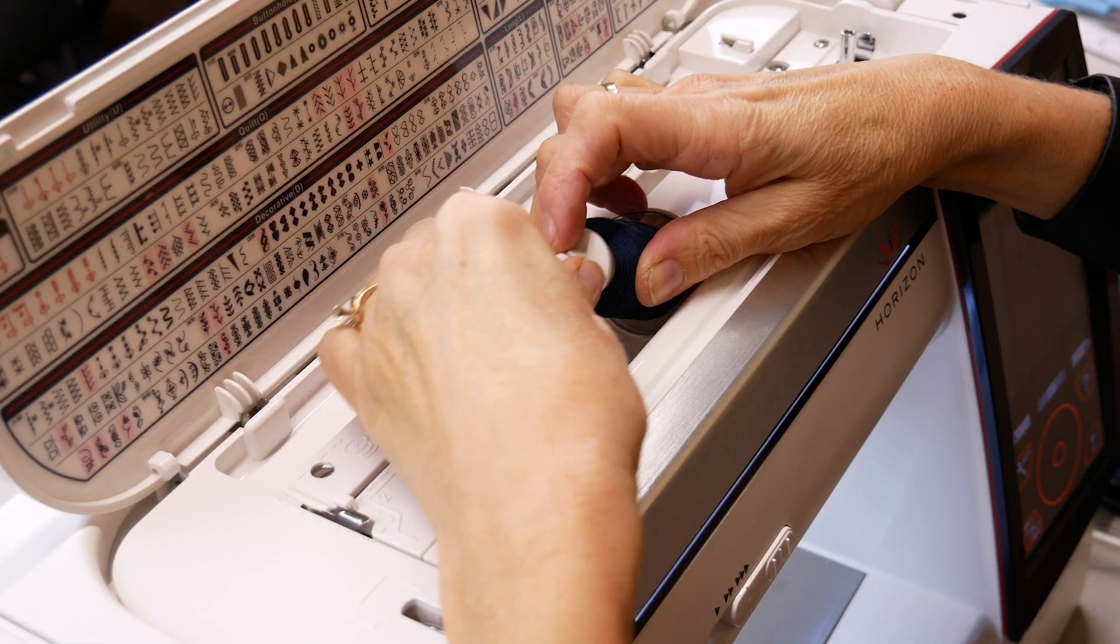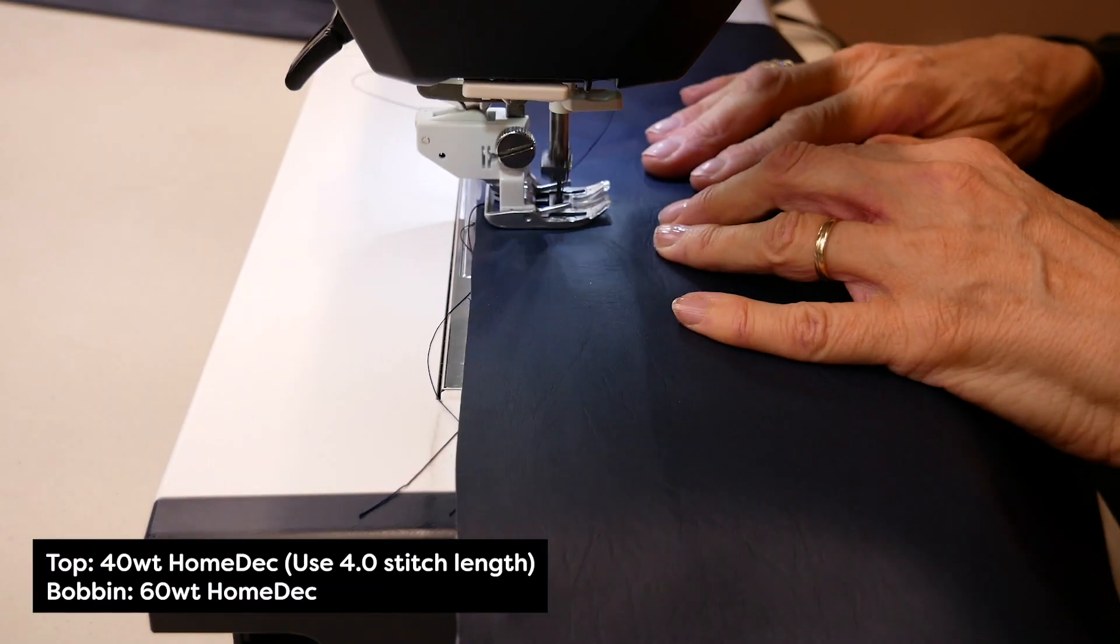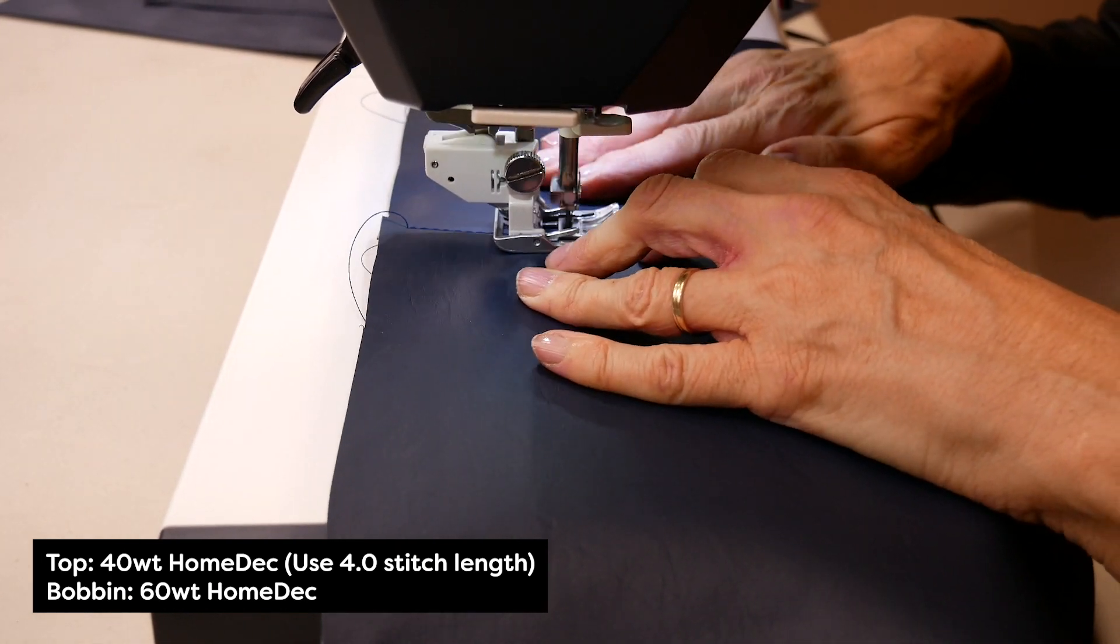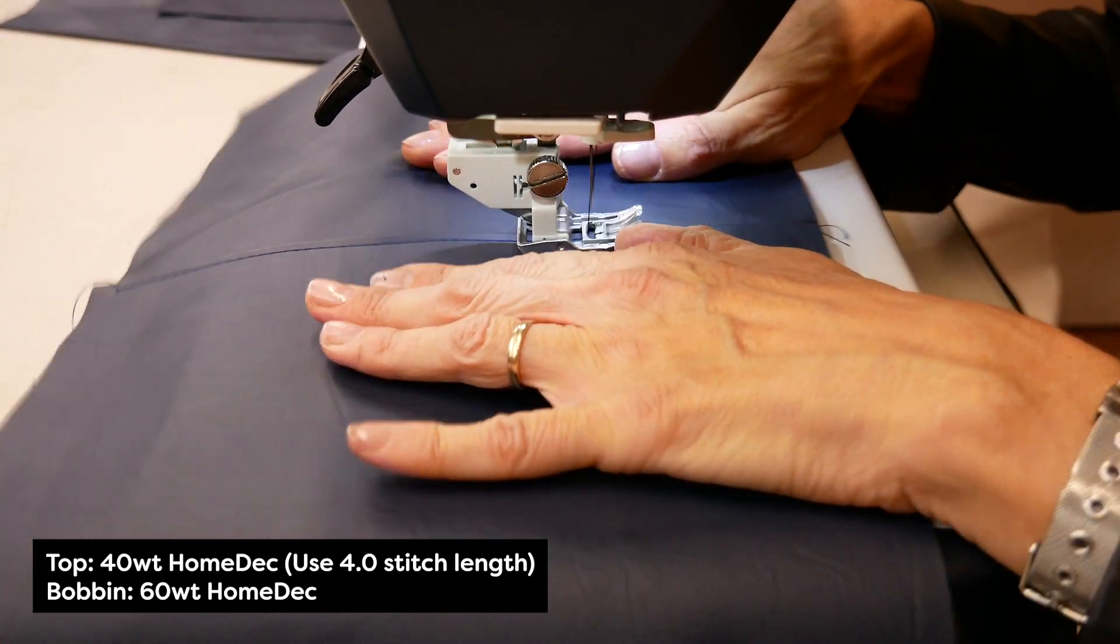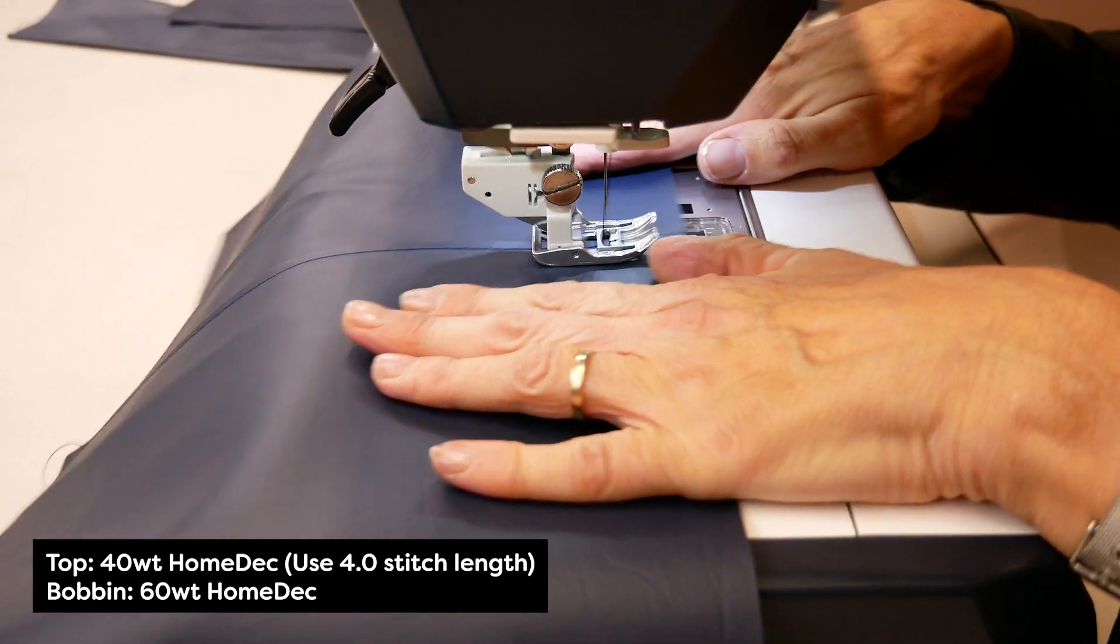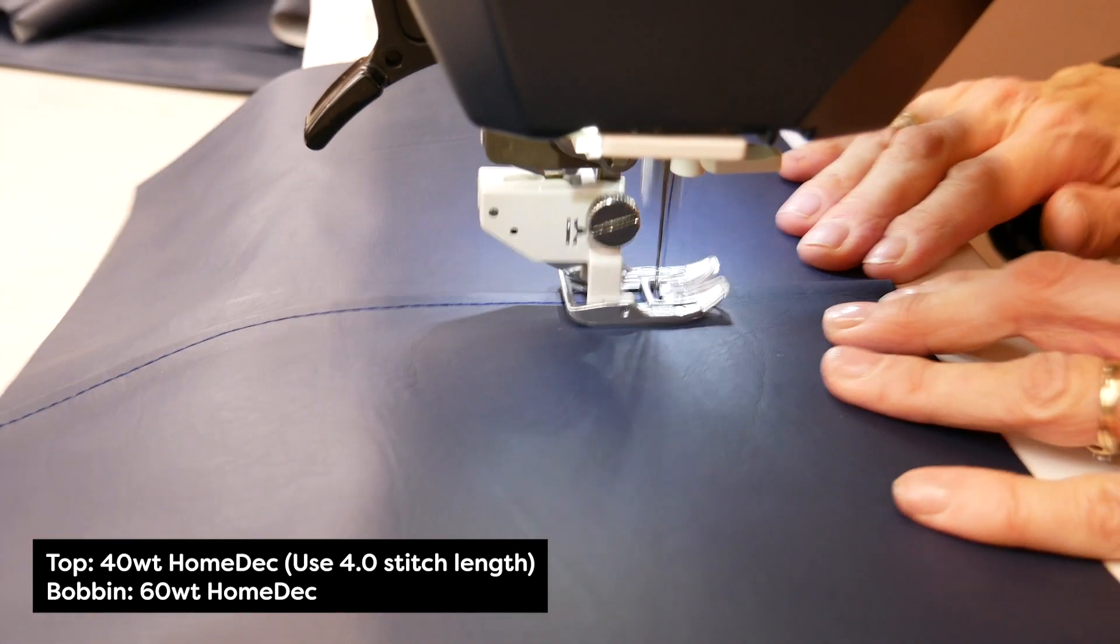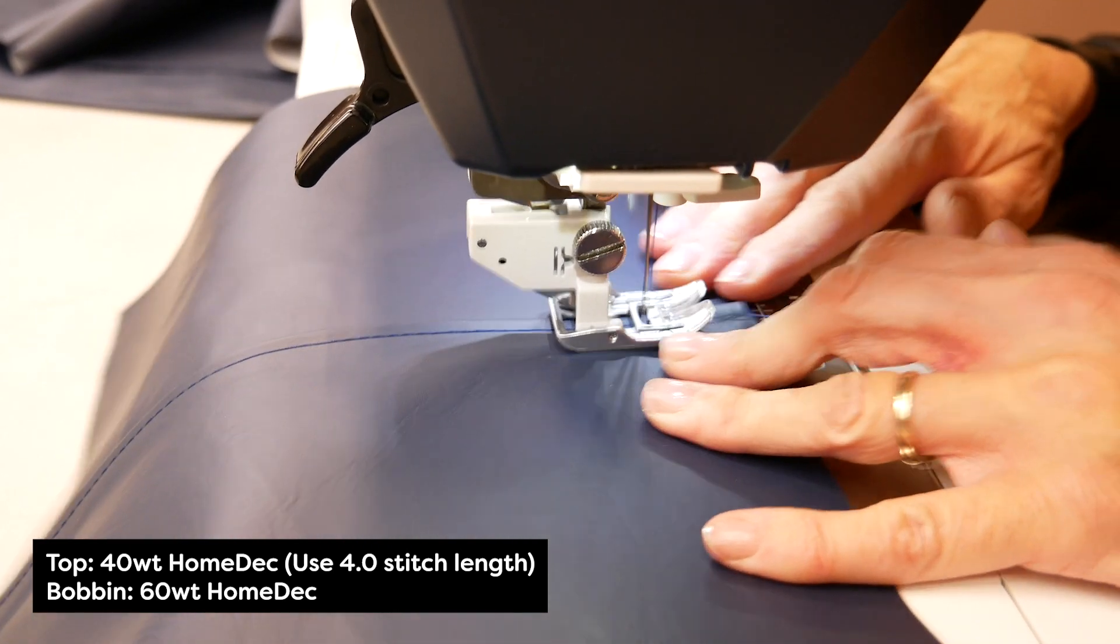Then switch to 30 weight home deck in your needle and run an even line of top stitching along that side of the seam. You may want to test your stitching on a scrap to make sure that your machine is able to handle the heavier fabrics. If it is a problem, you can choose to top stitch the seams on either side of a pressed open seam.